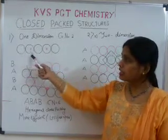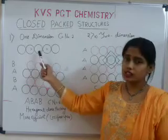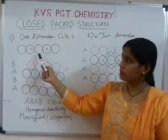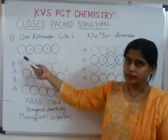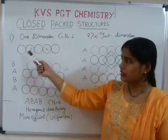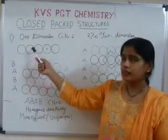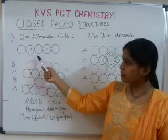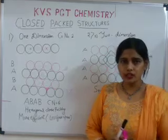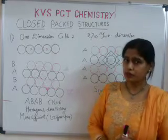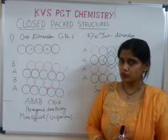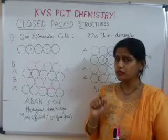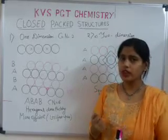Here, individual atoms are touching another atom. In such kind of arrangement, the spheres are in contact with the immediate next sphere. Now, we need to find the coordination number. Coordination number is simply the number of spheres touching the atom.